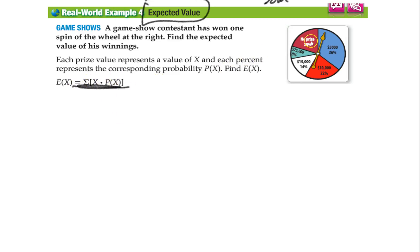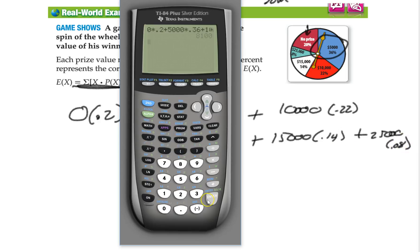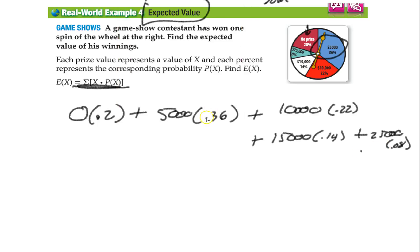So let's look here. A game show contestant has one spin of the wheel at the right. Find the expected value of winning. The idea here is, if you're going to spin this wheel, what do you expect to get on average? The way you find it, it's very simple. We're going to find the sum of each value times its probability. So first value, no prize. That's zero. That's 20% chance of that happening. Plus the next one, 5 grand, 36% chance of that happening. Plus 10 grand, you have a 22% chance. Plus 15 grand and 14%. And then finally, 25 grand, you have an 8% chance. And we're going to multiply this all together using our calculator. And we get $8,100. So on average you get 8,000.